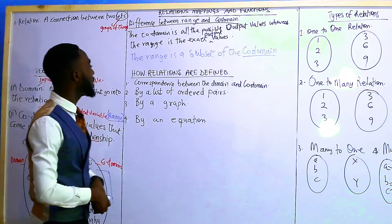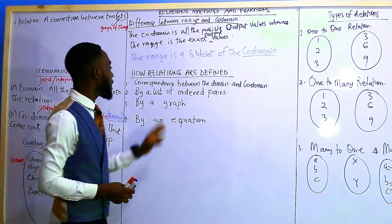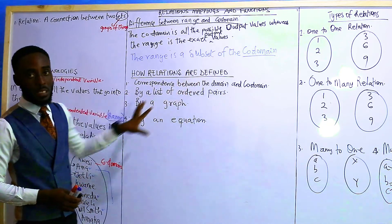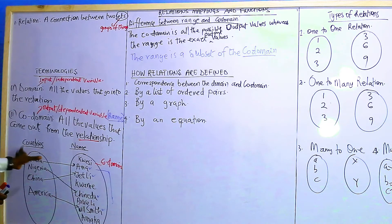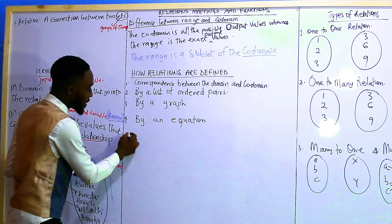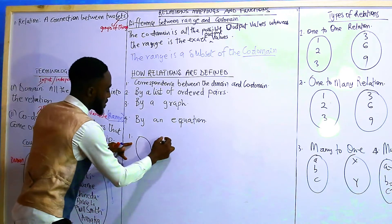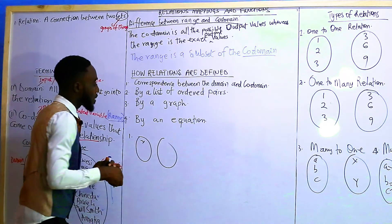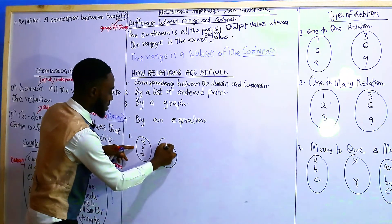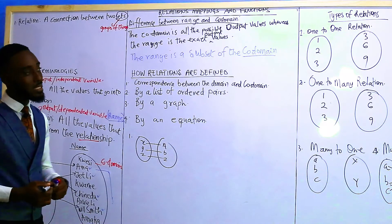The next thing we'll talk about is how relations are defined — how they can be expressed or seen. You can see a relation as a correspondence between the domain and the co-domain, just as we have here with two sets. The first way is as a correspondence diagram, for example: X, Y, Z mapping to A, B, C.